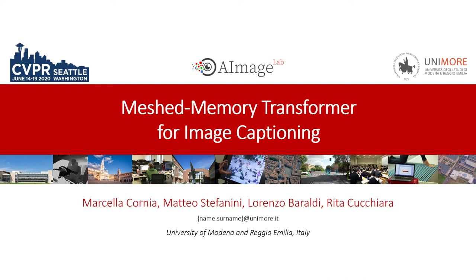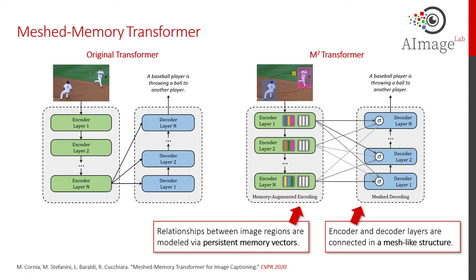We present Meshed Memory Transformer for Image Captioning, a work done at the University of Modena Reggio Emilia. Unlike the original transformer, in our model we include memory vectors in the encoder side and design a mesh-like structure to connect encoder and decoder layers.